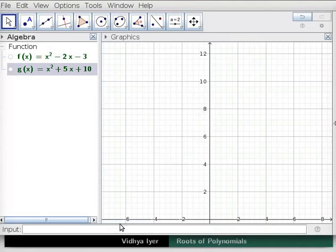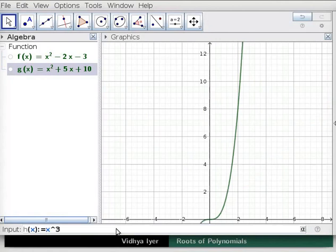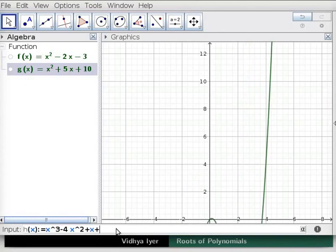In input bar, type h(x) := x^3 - 4x^2 + x + 6. Press enter.